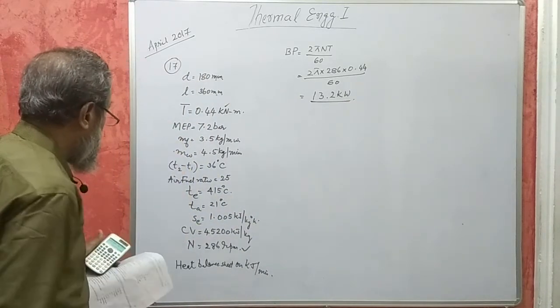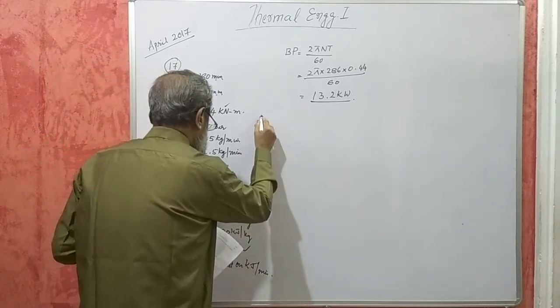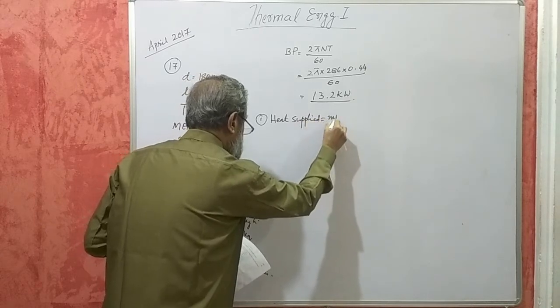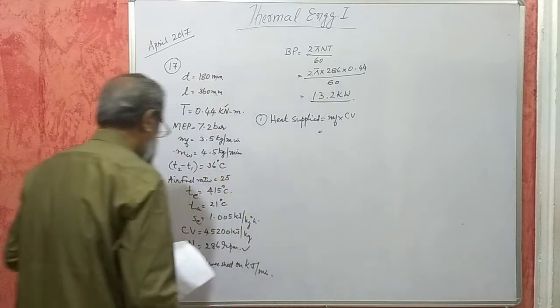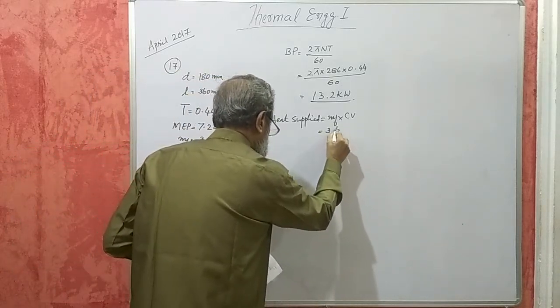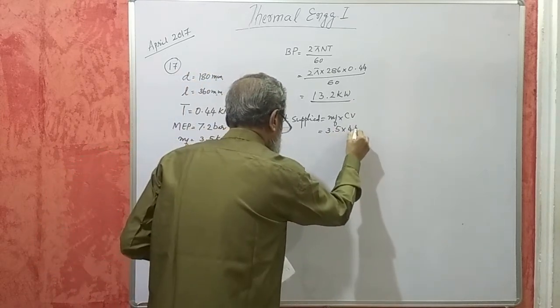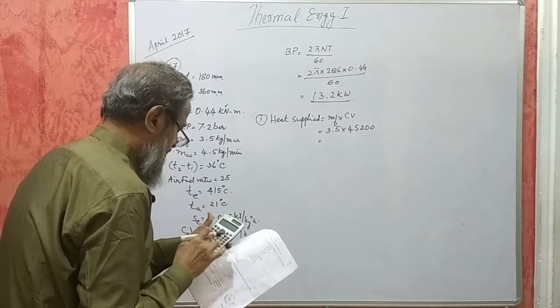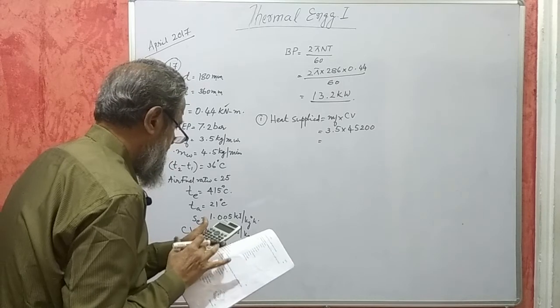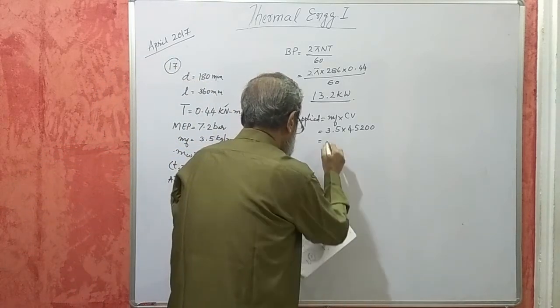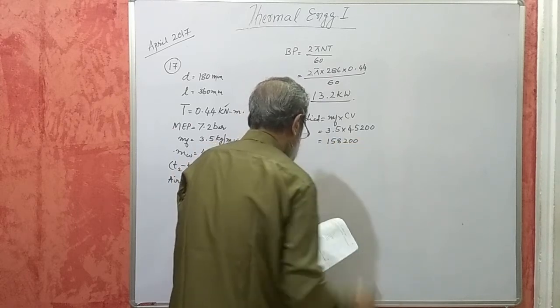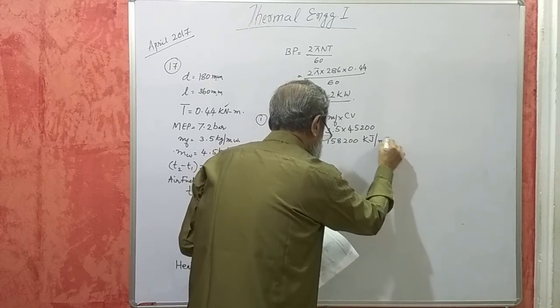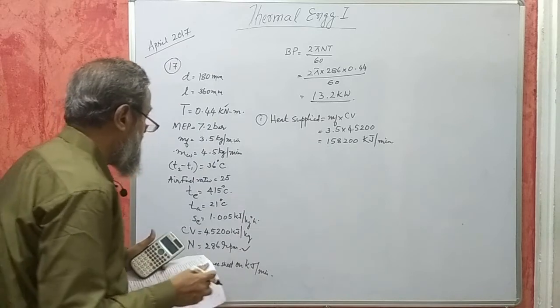Now I do not require anything else to do heat balance sheet. The calculations are heat supplied is MF into CV. Both are given, direct 3.5 into 45,200. Gives me 158,200 kilojoules per minute. This is the heat supplied.